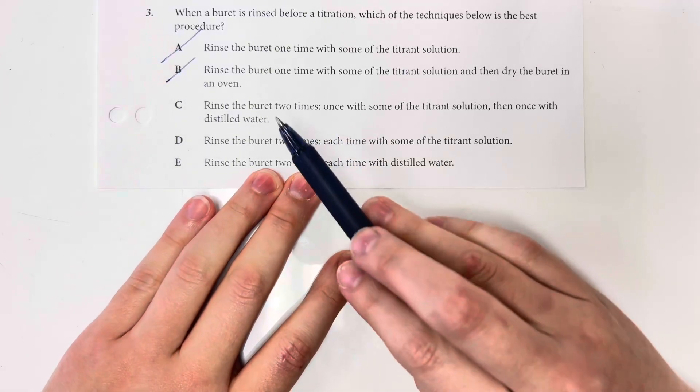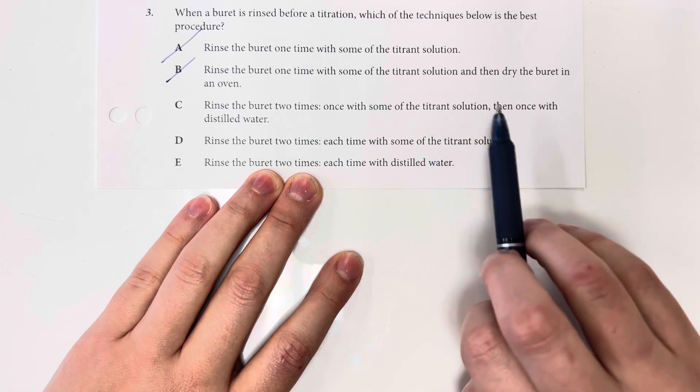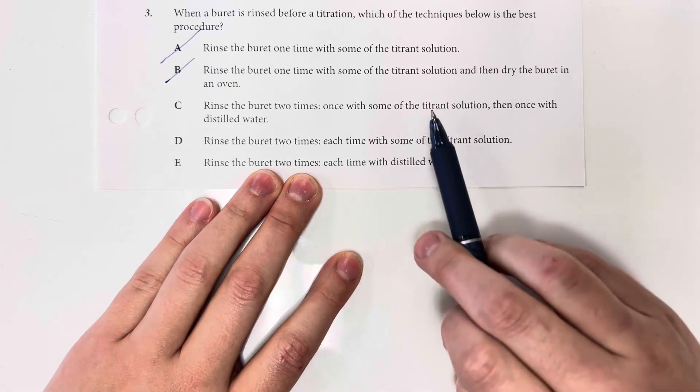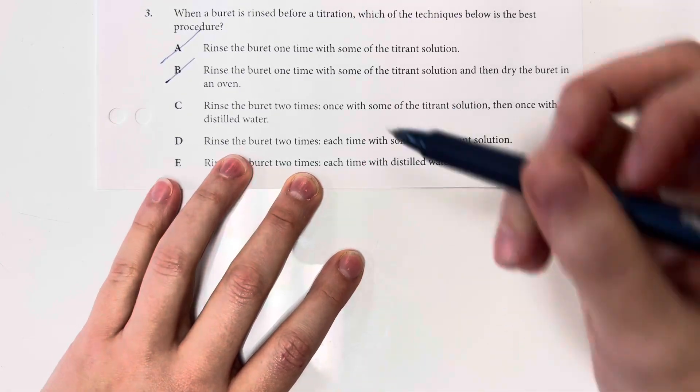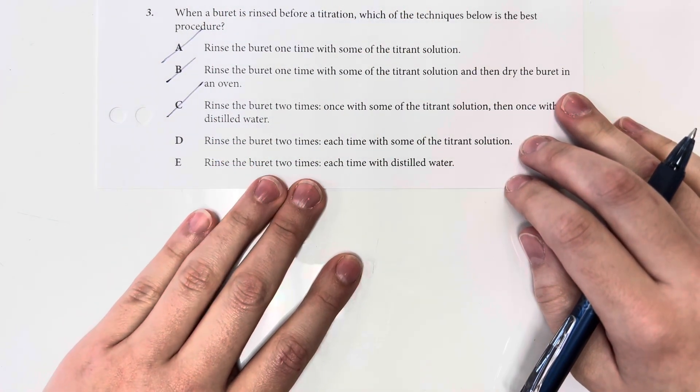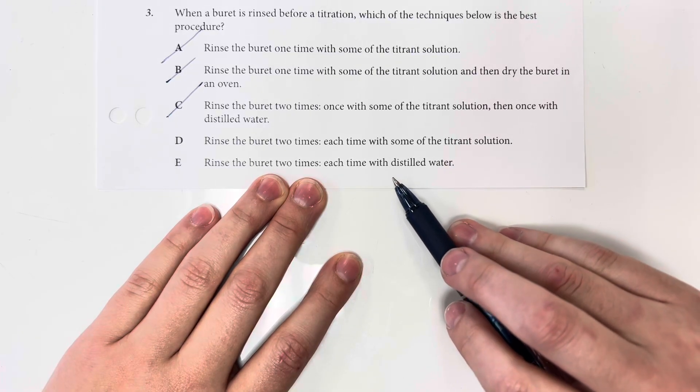Option choice C says I wash it twice, which is good. Once with the titrant solution, that's good. Then, once with the distilled water, that's not going to be good. That's going to wash out my titrant solution, and that could mess with my molarity. Rinse a burette two times, each time with some titrant solution, that is going to be best practice there.